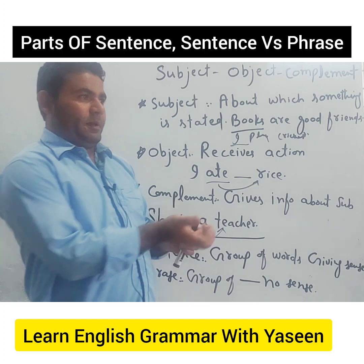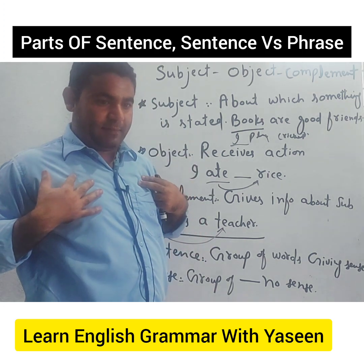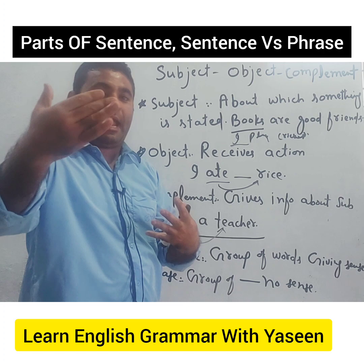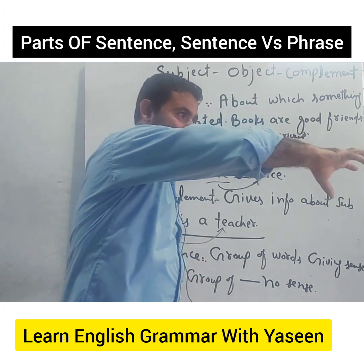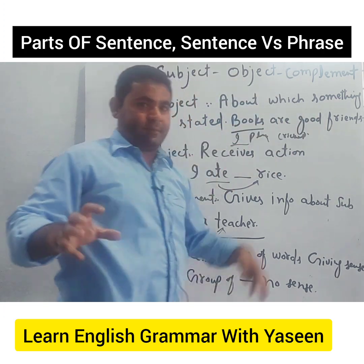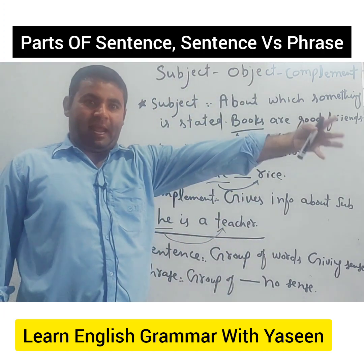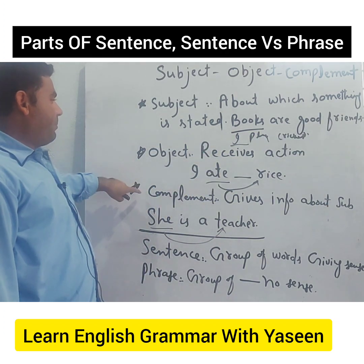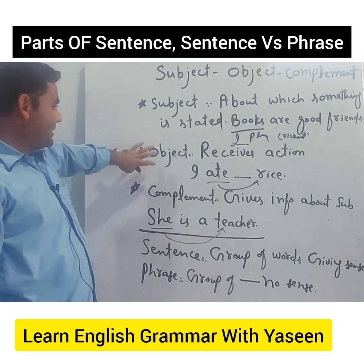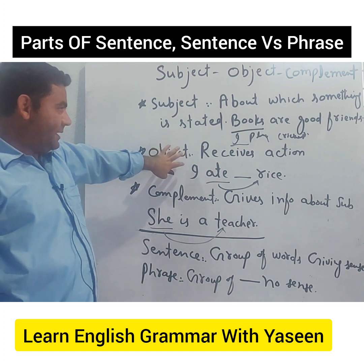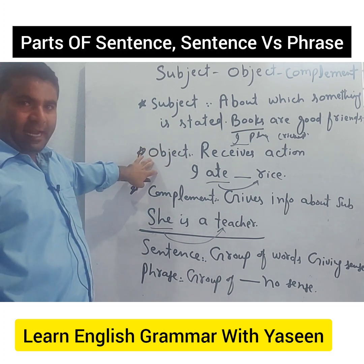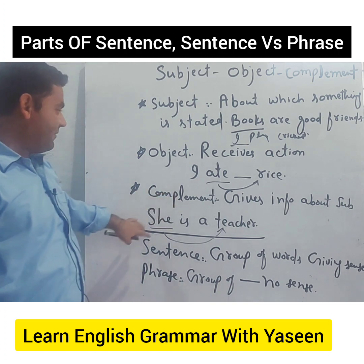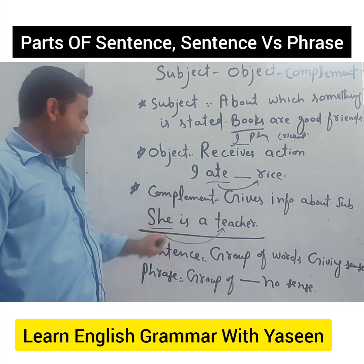For example, 'I eat apples.' I am the performer of the action; eating is my action. And the object is apples because apples receive my action. We compared complement with object and stated that object answers the verb, while complement gives information about a noun or pronoun.